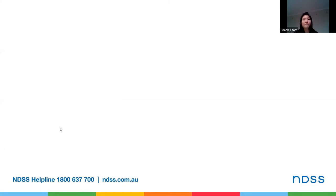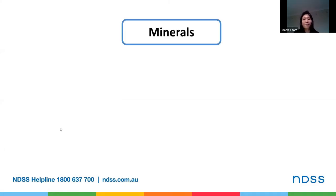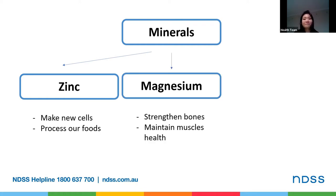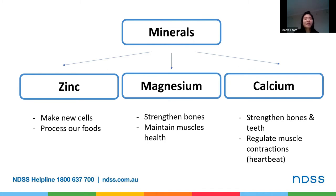Some carbohydrate-rich foods are also high in minerals, such as your fruits, vegetables, whole grains, and dairy. Zinc helps make new cells and process our food, and is often found in your beans and whole grains. Magnesium helps strengthen bones and teeth, and also regulates your muscle contractions, such as your heartbeat. Calcium is usually found in carbohydrate-rich foods such as your milk and yogurt.